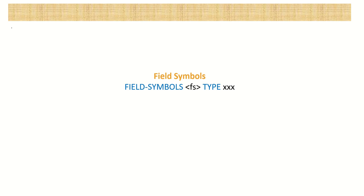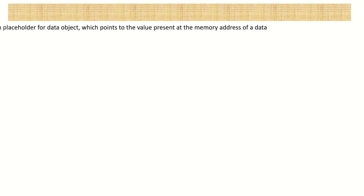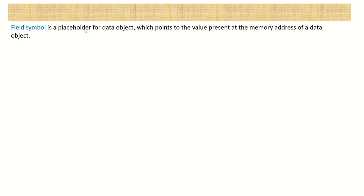Hello everyone. Today in ABAP we are going to learn one new object called field symbol. Let's see what exactly the field symbol is and what are the benefits of using it. Field symbol is a placeholder for a data object which points to the value present at the memory address of that data object. If you are working in other programming languages like C, we use the pointer concept — field symbol can be correlated with that pointer concept.